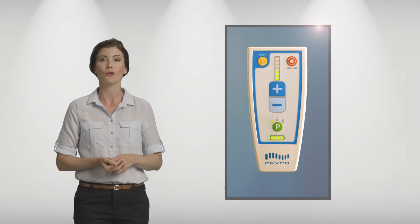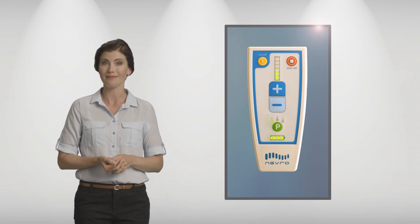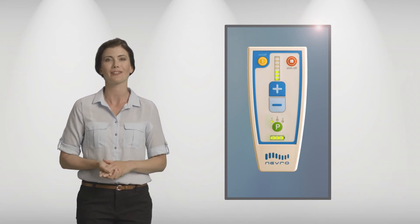To adjust the number of lights, press the plus or minus button until you see the desired number of lights. Move through your schedule unless otherwise instructed by your Nevro representative or your physician.